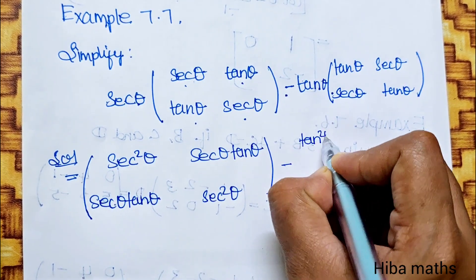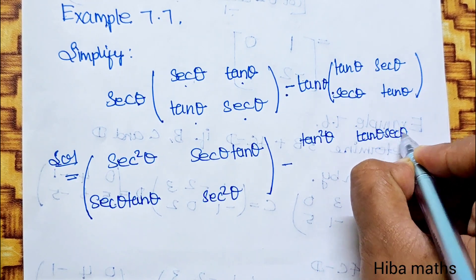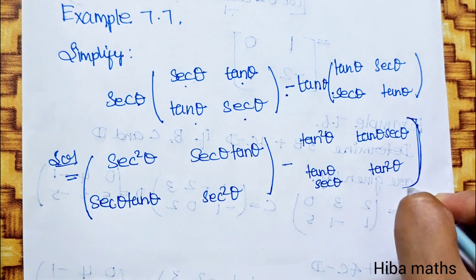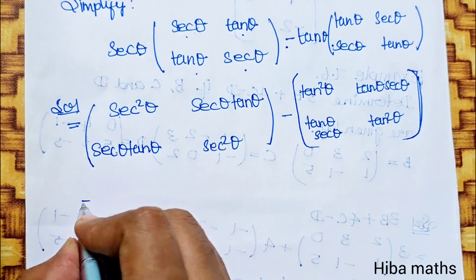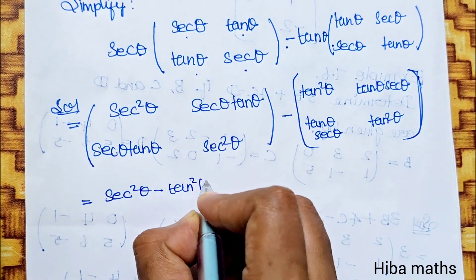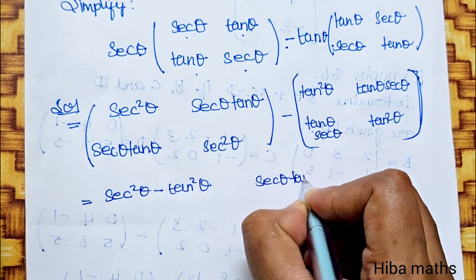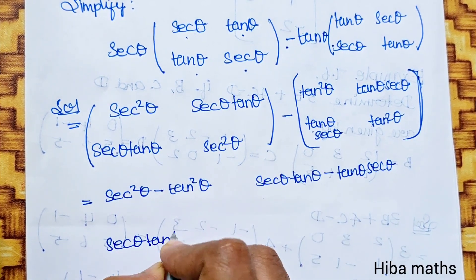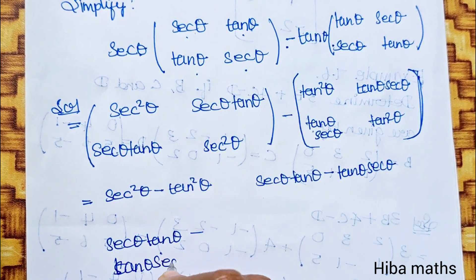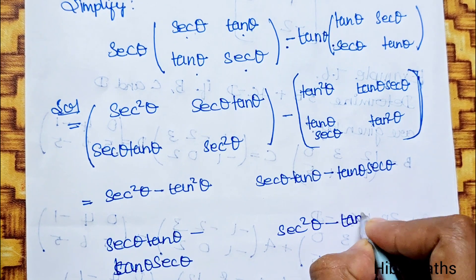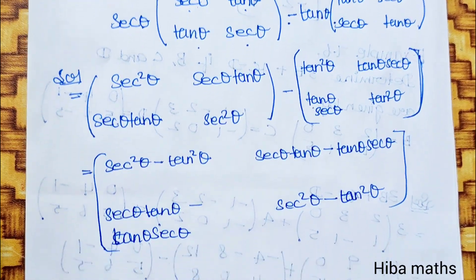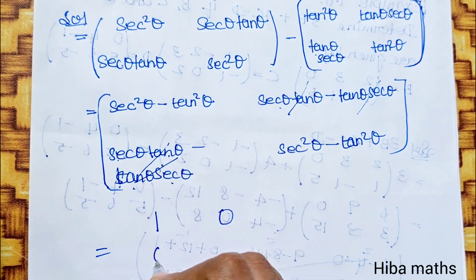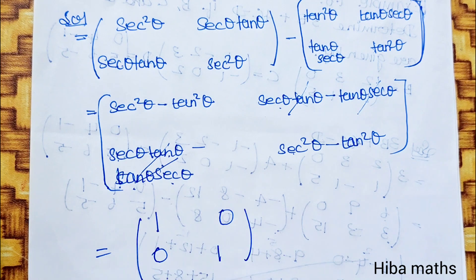Minus tan into tan gives tan squared theta. Tan theta times secant theta. Then we multiply secant theta tan theta minus tan theta secant theta. Secant squared theta minus tan squared theta equals 1. The like terms — plus and minus cancel to 0. Secant theta tan theta and secant theta tan theta cancel to 0. Secant squared theta minus tan squared theta equals 1. This is the final answer.